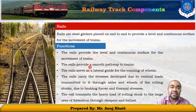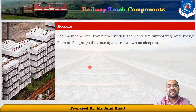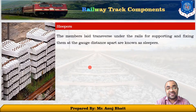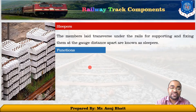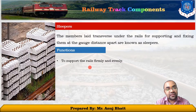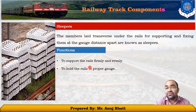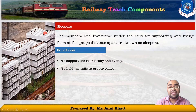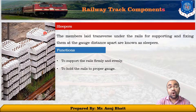The next component is sleepers. Sleepers are the members that are laid in a transverse direction under the rails for supporting and fixing them apart to the gauge distance. Talking about the functions of sleepers: to support the rail firmly and evenly, and to hold the rails to the proper gauge. As you can see, there is a bolted or screw connection here. The rails have to be fitted properly so that they can hold the rail at the proper gauge distance.